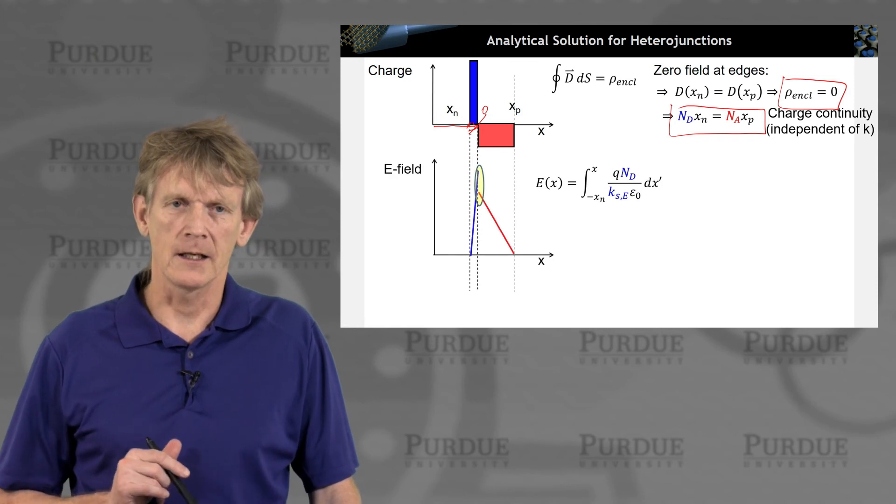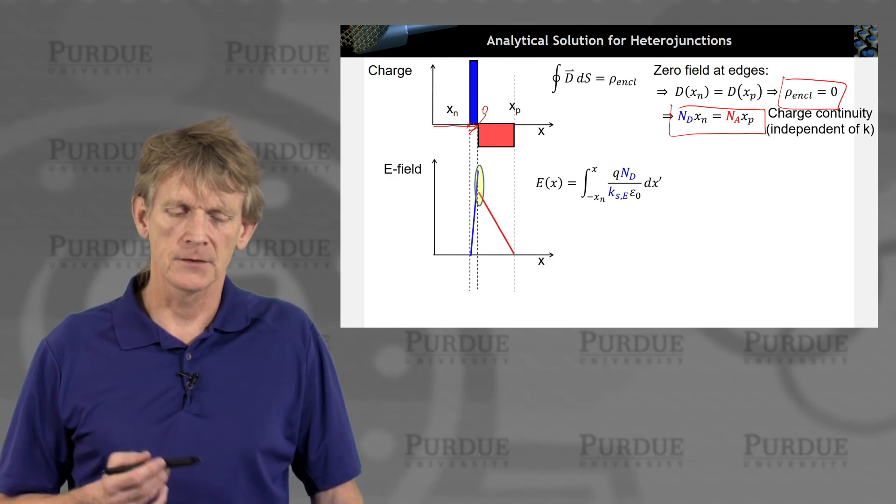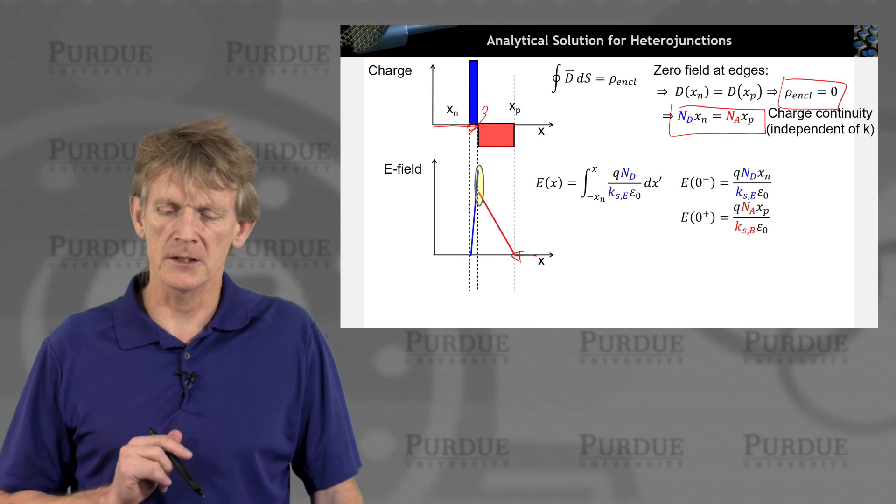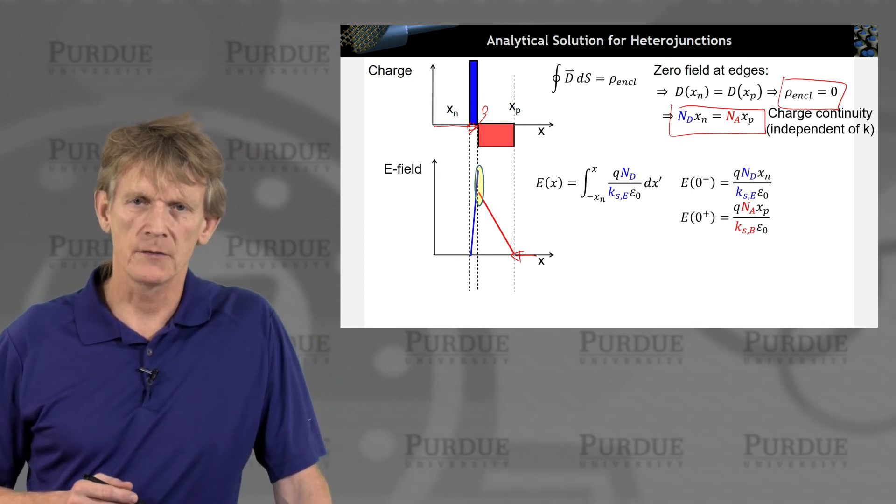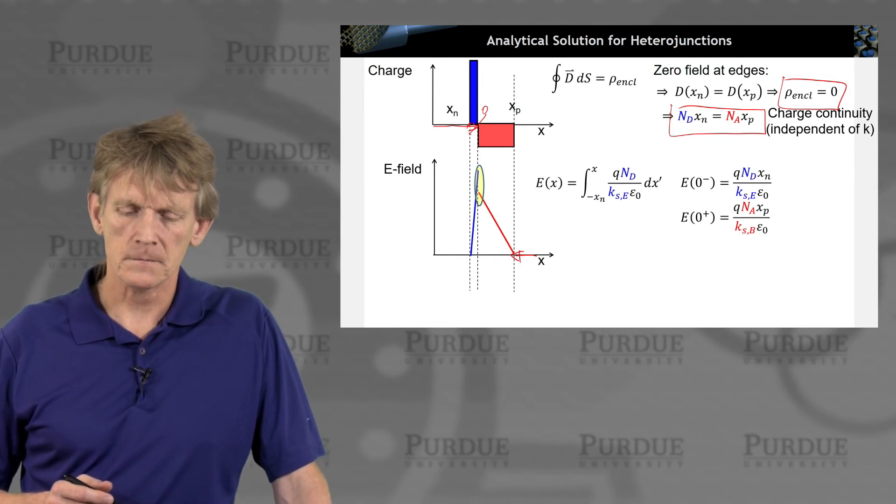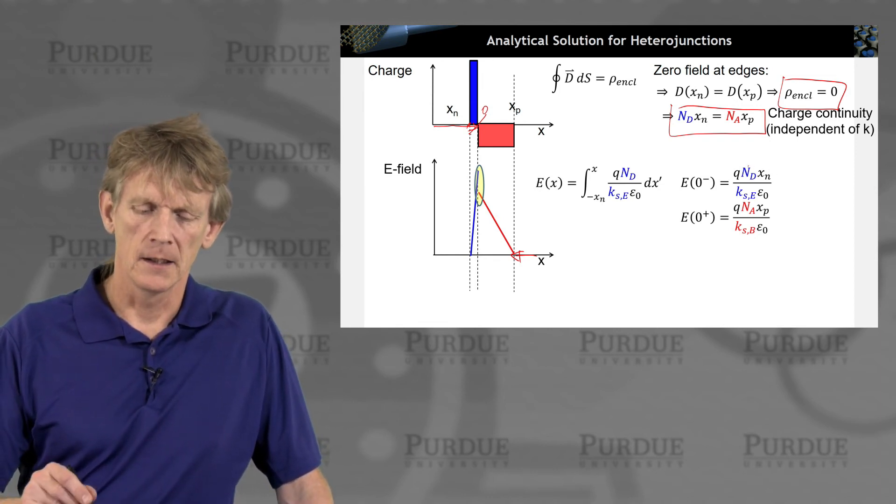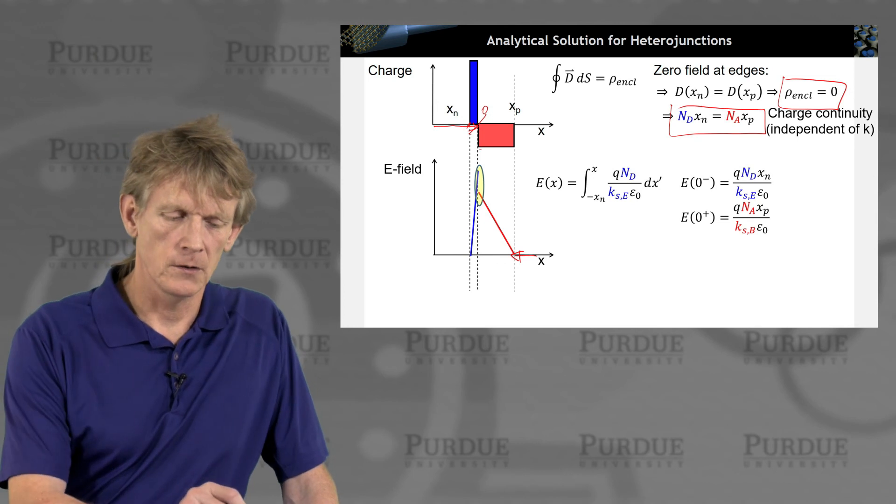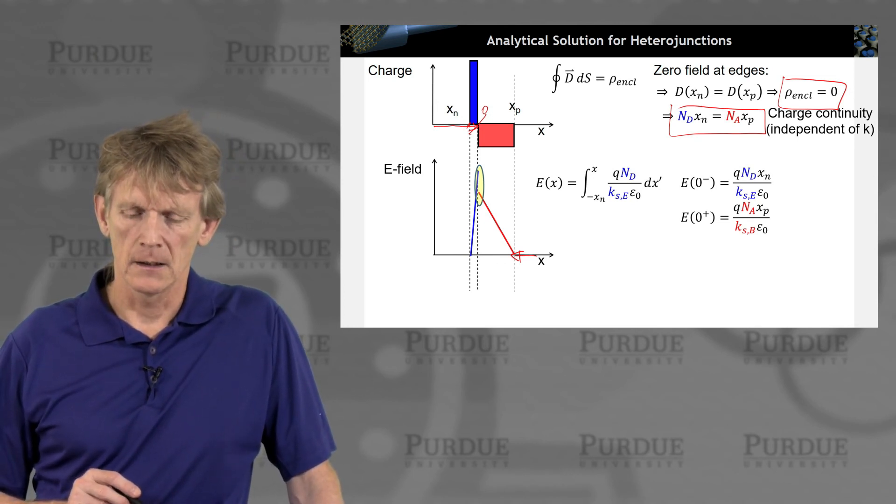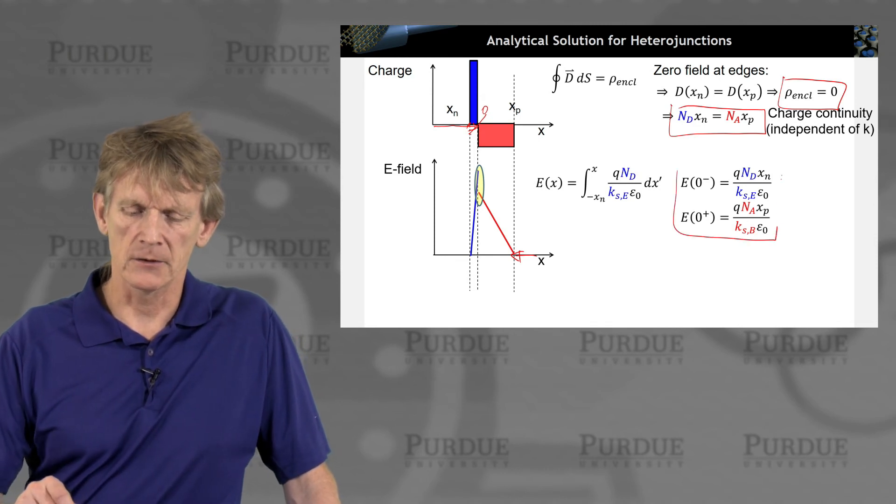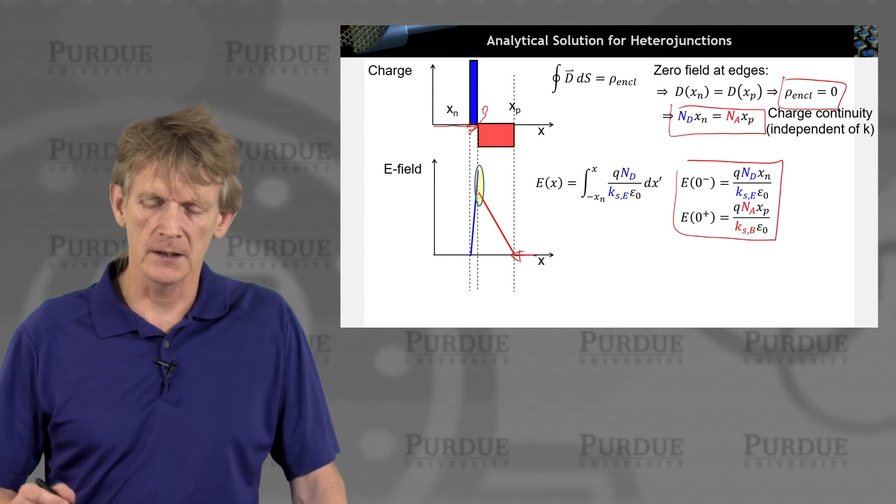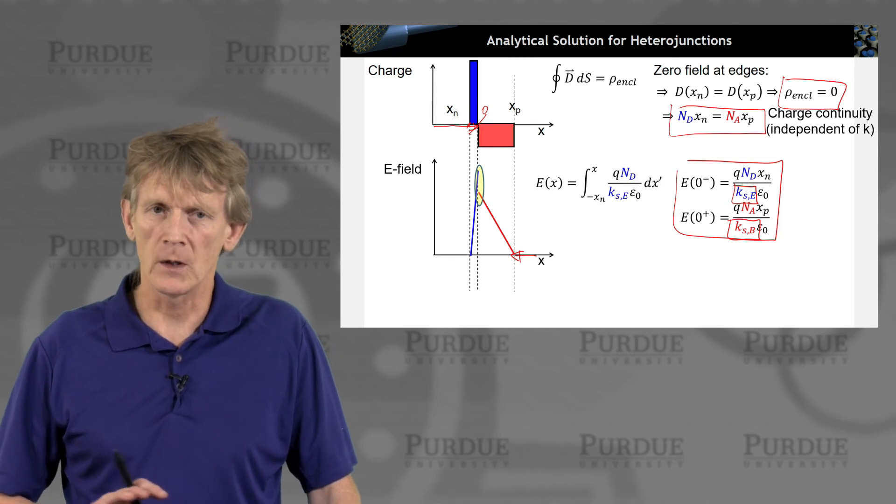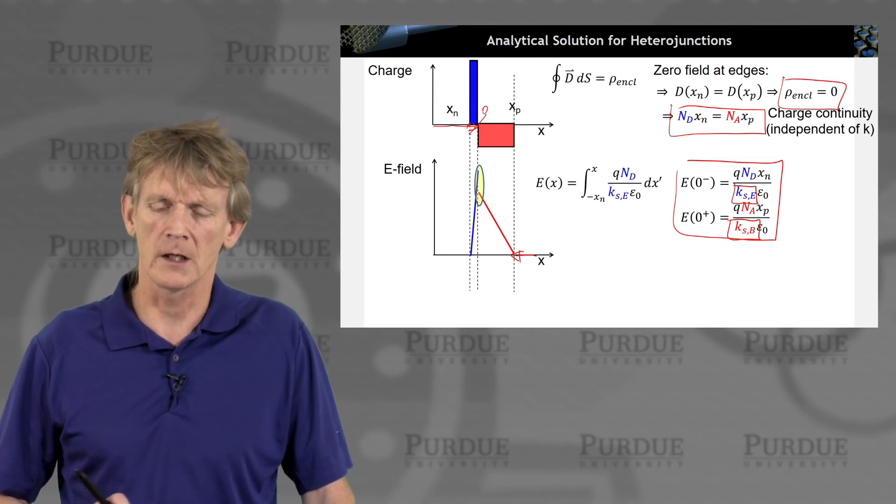We know we get an electric field that rises linearly, has a certain value. We could do the integral from the right starting from here and have a similar expression, and we can determine the electric field at the interface. And the fields are determined by the distance or the length of these areas of exposed dopants and acceptors, and we have an expression for the electric field. And what's different from what we had before is only that the dielectric constants are different on the left and the right-hand side of this junction. Otherwise, the expressions are exactly the same as what we had in a PN diode.